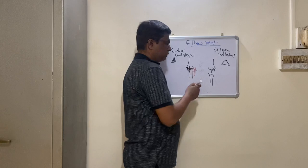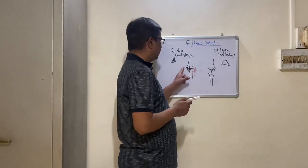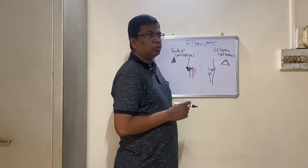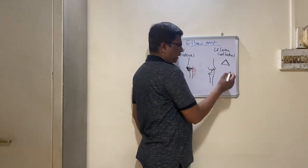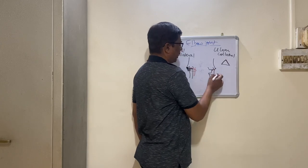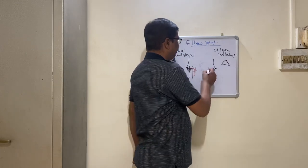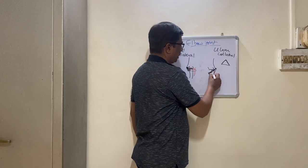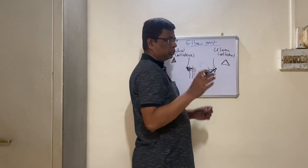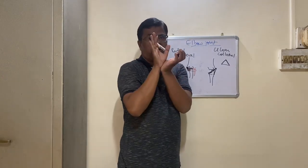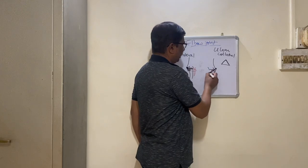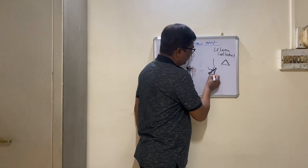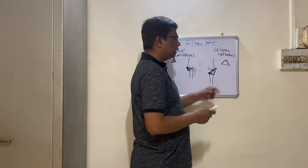The radial collateral ligament fans from the lateral epicondyle and attaches to the annular ligament. The ulnar collateral ligament is a proper triangle — its apex is attached to the medial epicondyle of the humerus. It has an anterior band attaching to the coronoid process of the ulna and a posterior band attaching to the olecranon process of the ulna.